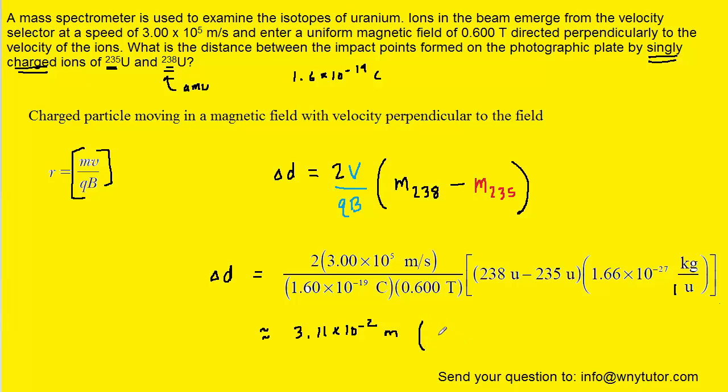And then, of course, if we needed to convert that into centimeters, we note that 1 meter is equivalent to 100 centimeters. And so, when we perform that conversion, we get approximately 3.11 centimeters. So, this turns out to be the correct answer.